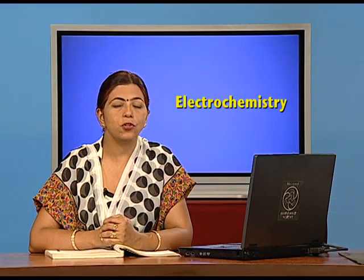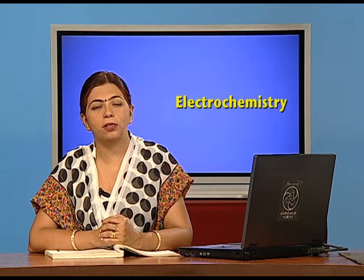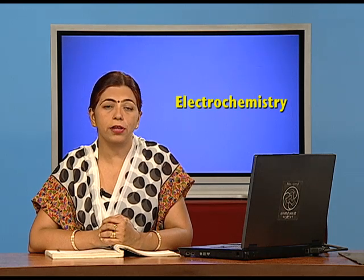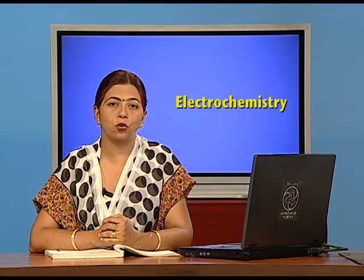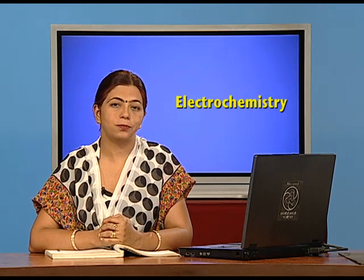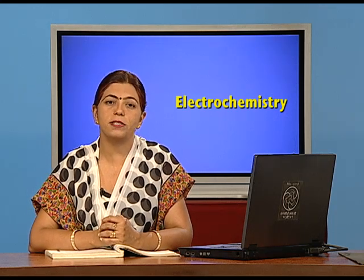Corrosion is included in the lesson on electrochemistry because it is actually an electrochemical phenomenon — there is a development of anode and cathode on the iron or any other metal surface. The next application of electrochemical phenomena is cells and batteries, which we use in day-to-day life.